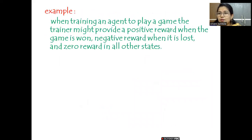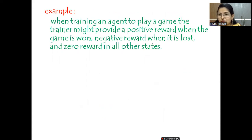A general example: we all have Android mobiles and play games. When you are playing against the computer, whenever the computer wins it receives a reward from a trainer. If it is losing, it receives a negative reward — a penalty. If the game is a draw, it receives zero reward.